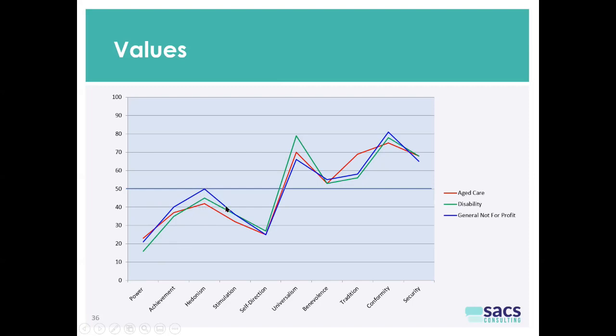Stimulation means believing it's important to do new and different things. Self-direction is very low, meaning people don't need to be self-directed in their work. But what people are very strong in is universalism — I want to make the world a better place, I want to create social justice and environmental sustainability, I want to help the world to be a fairer, more reasonable, and more sustainable place. That's a very strong motivation for people to come to the sector.